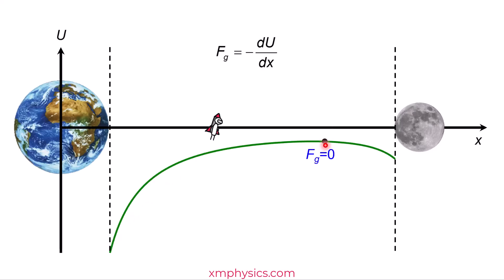Between the Earth and the null point, dU/dx is positive, which means Fg is negative, which means the net gravitational pull is leftward. It makes sense because the rocket man is gaining GPE as he goes against the net gravitational pull. Between the null point and the Moon, dU/dx is negative, which means Fg is positive, meaning the net gravitational pull is towards the Moon. That's why GPE is decreasing in this region — instead of working against the gravitational pull, you're letting yourself be pulled along by the gravitational force to lower and lower GPE. As for the magnitude of the gravitational pull, just look at the steepness of the graph.